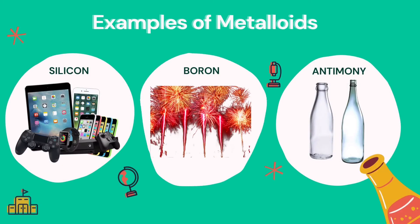Here are the examples of metalloids. First is silicon, which is used in the manufacture of computer chips in gadgets such as laptops, smartphones, and desktop computers. One of the most explosive metalloids is boron, which is used in fireworks and burns green in color. Another example is antimony, which is used in making glass bottles.